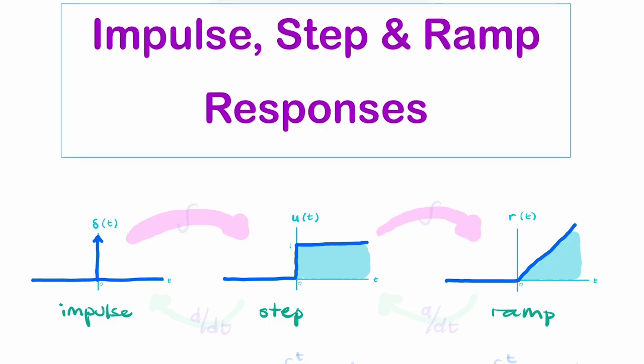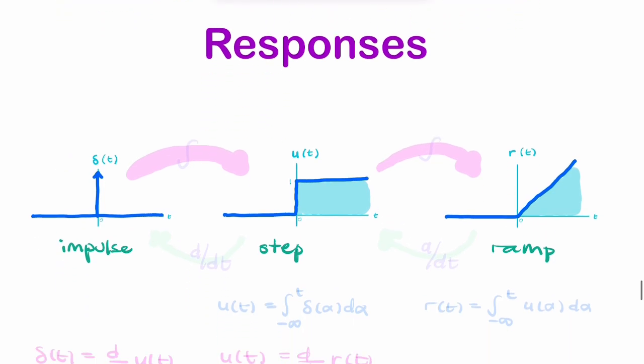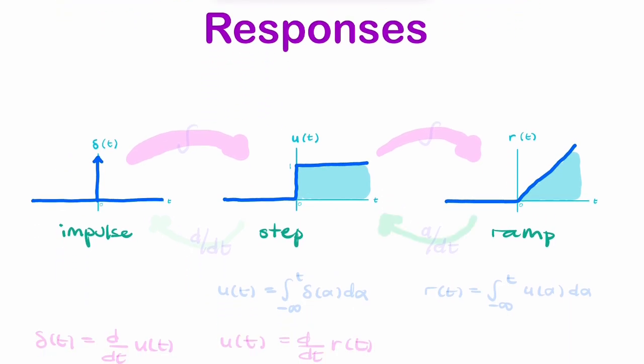And you can do the same backwards. If you were to take the unit ramp and differentiate it, you would get the unit step. If you were to take a unit step and differentiate it, you would get the unit impulse. Here we have integration, and here we have differentiation.